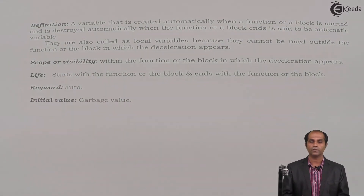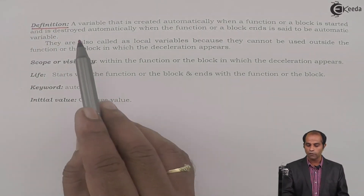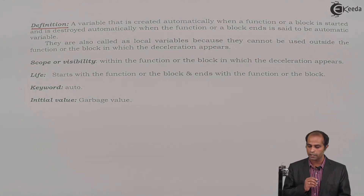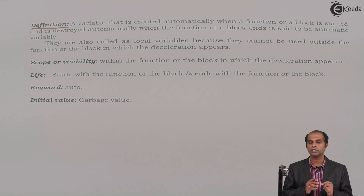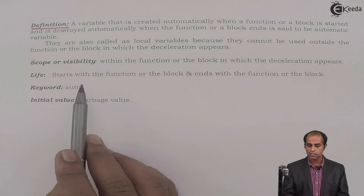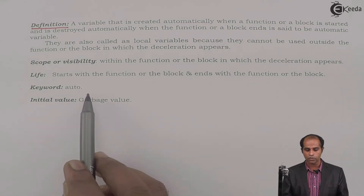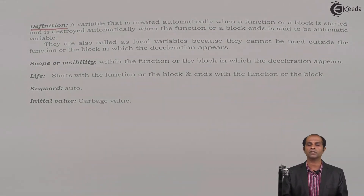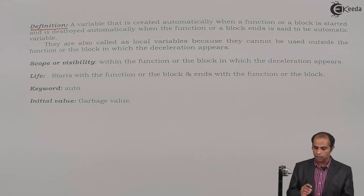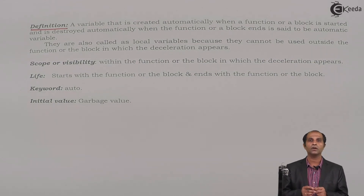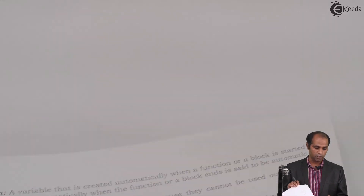Formal five-point answer: Definition — a variable that is created automatically when a function or block starts and is destroyed automatically when it ends is called an automatic variable. They are called local because they cannot be used outside the block or function where declared. Scope: within the function or block. Life: starts and ends with the function or block. Keyword: auto. Initial value: garbage value.